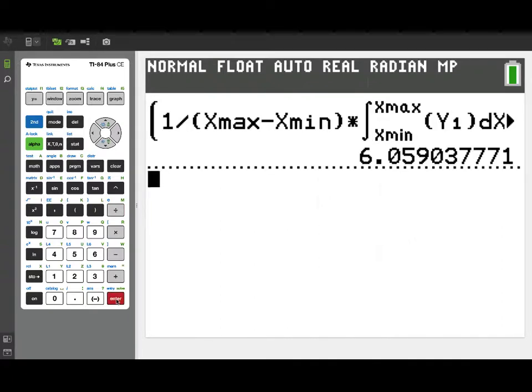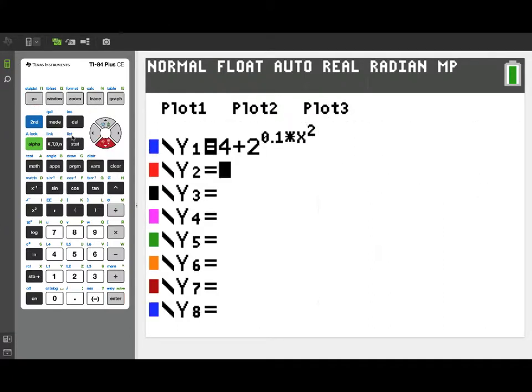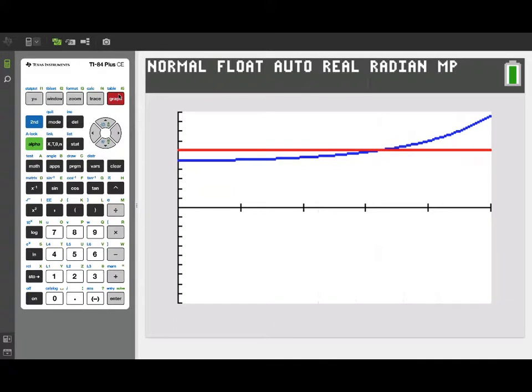So here we have the average value of that function over the time interval 0 to 5. Now what I'd like to do next is actually graph the constant function that has that same average value. So notice that the definite integral of my constant function is simply going to be given by the height above the x-axis that that horizontal line is times the length of the interval. And that's giving us the same definite integral as our original function.